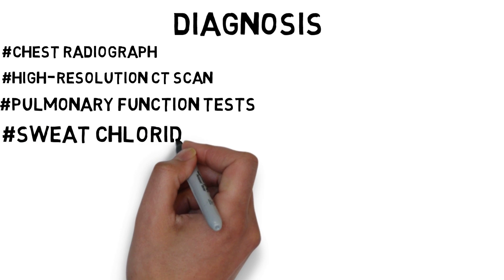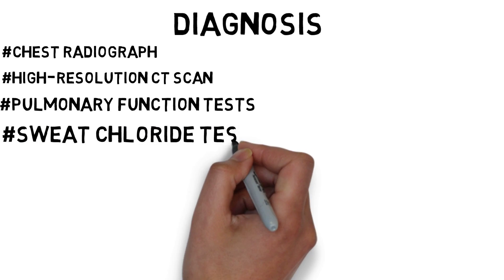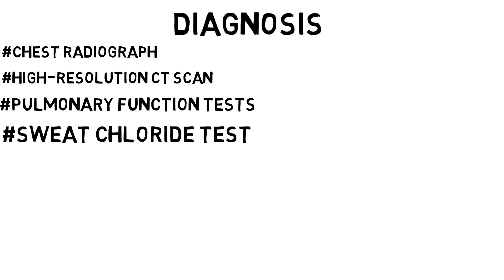Sweat chloride test: cystic fibrosis is usually diagnosed early in life, with about 70% of cases diagnosed by age 1 year. However, the few patients in whom diagnosis is not made until early adulthood usually present with recurrent respiratory symptoms. The initial test in the adult patient presenting with clinical symptoms suggestive of cystic fibrosis is the sweat chloride test.